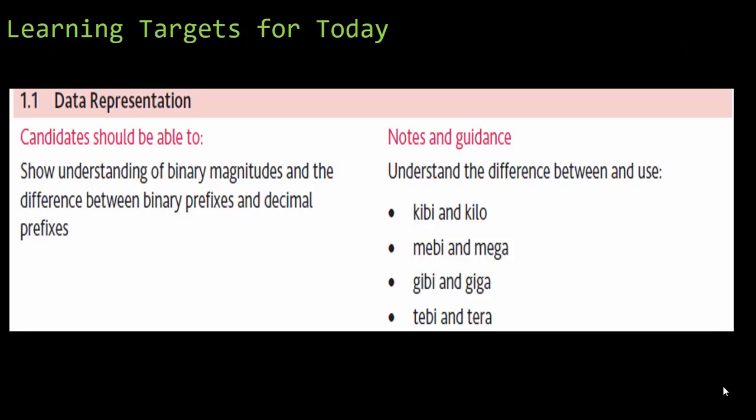You should be able to show an understanding of binary magnitudes and the difference between the binary prefixes and decimal prefixes. So we're going to be looking at binary magnitudes, and then we've got to understand the difference between kibi and kilobyte, mebi and megabyte, gibi and gigabyte, tebi and terabyte.